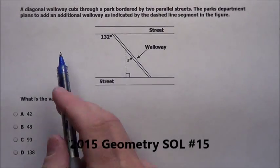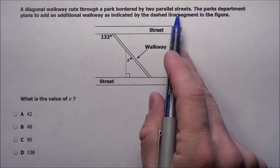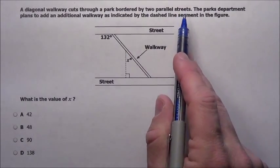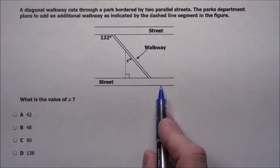Alright, problem 15. It says a diagonal walkway cuts through a park bordered by two parallel streets. So you have this street and this street, and this guy's coming down through here.